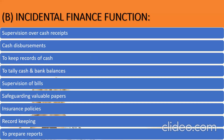Next, safeguarding the valuable papers. An organization might have surplus cash invested in some sort of assets, and those papers have to be preserved and safeguarded by a finance manager. Next could be insurance policies taken for the assets of the organization — the finance manager will have to fulfill the formalities, maybe asking for a claim or preserving the insurance policies. Thereafter, keeping records of all transactions taking place. Lastly, he also has to work for the preparation of reports — could be a balance sheet, a P&L account — to depict the financial performance or condition of the business enterprise.